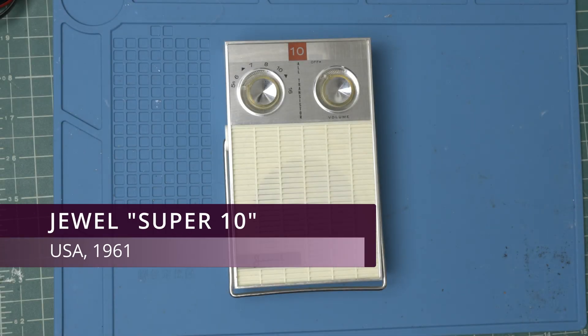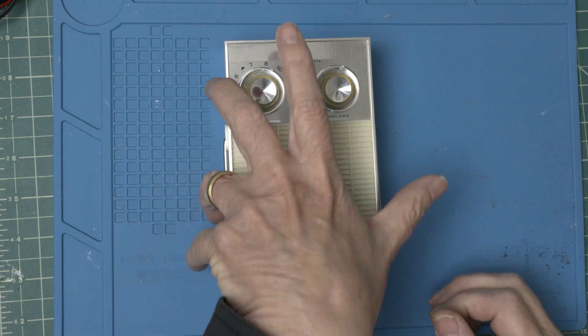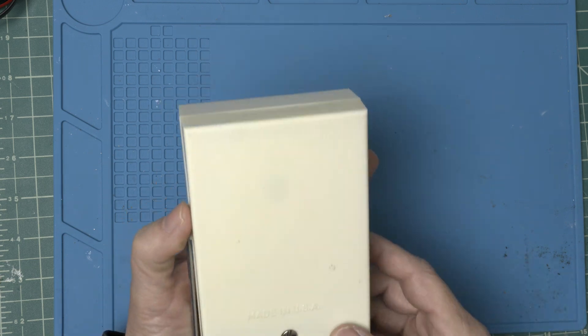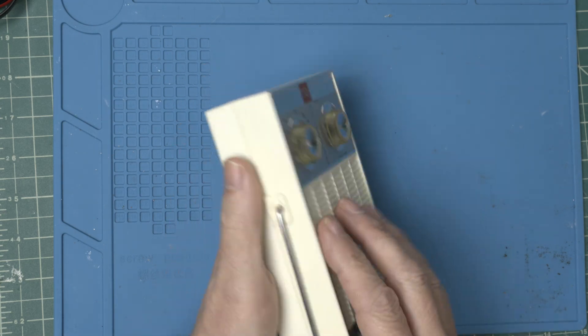Today on the workbench we have the Juul Super 10 made in the US in 1961. It was reported to have bad volume. So let's take it apart and see what's up.